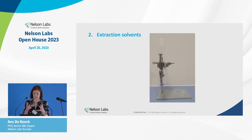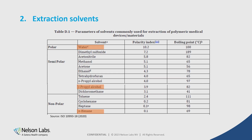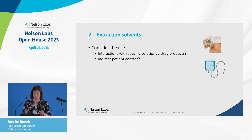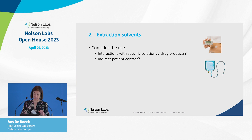We put the test items in a container and add solvents. The guideline says to use two solvents of differing polarity. Most often we use water as a polar solvent and hexane as a non-polar solvent. For blood contact or long-term implants, a third semi-polar solvent like isopropanol can be added. You also have to consider use-specific interactions — you might add an additional solvent — or for indirect patient contact it can suffice to test only one solvent, for example sodium chloride for a saline infusion bag.